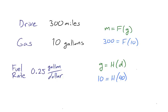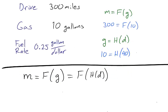How could we use h and f to describe the cost of driving? We use composition. Since m equals f of g and g equals h of d, we can substitute h of d for g to find that m equals the composition of f and h.